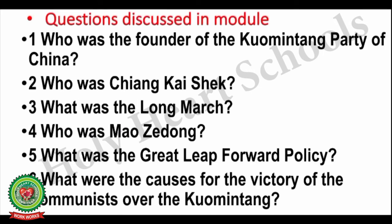These are the questions covered in this module: Who was the founder of the Kuomintang Party of China? Who was Chiang Kai-shek? What was the Long March? Who was Mao Zedong? What was the Great Leap Forward policy? And what were the causes for the victory of the communists over the Kuomintang? You can see a YouTube link on your screen for more information. With the help of this explanation and the internet, you are supposed to make notes of this topic. We'll meet you in the next session. Till then, have a nice day.